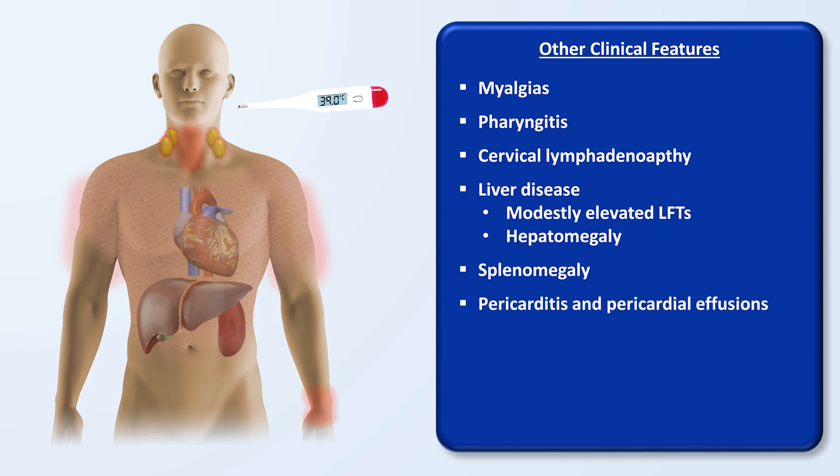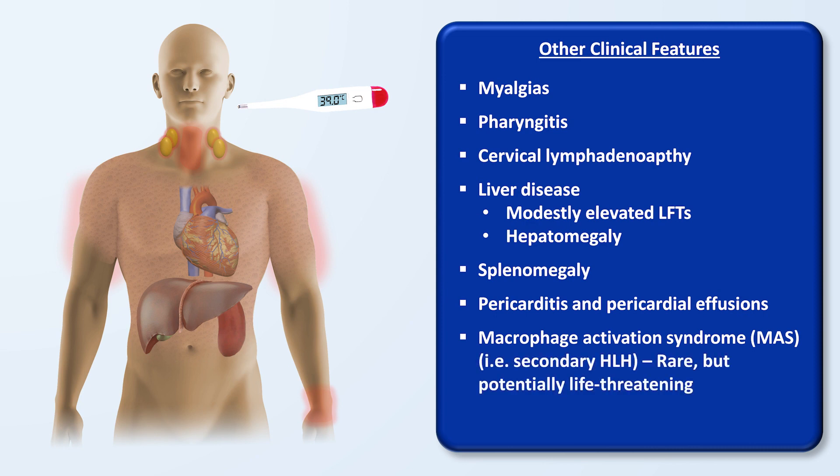Pericarditis and pericardial effusions, and the most serious of manifestations of adult-onset Still's disease is macrophage activation syndrome, which is synonymous with hemophagocytic lymphohistiocytosis associated with rheumatologic condition.